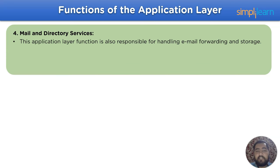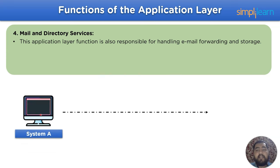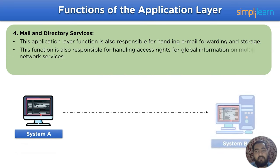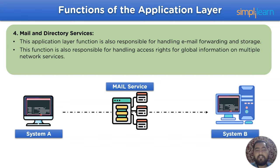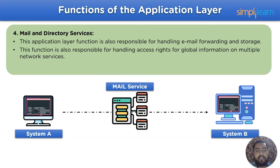The fourth function is mail and directory services. The application layer is responsible for handling email forwarding and storage. It is also responsible for handling access rights for global information on the network services. With this, we have completed all the important functions of the application layer in an OSI model.